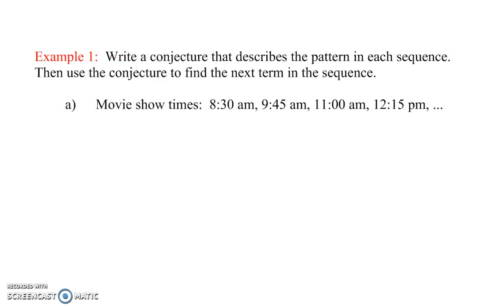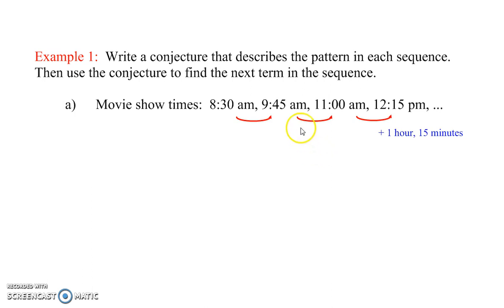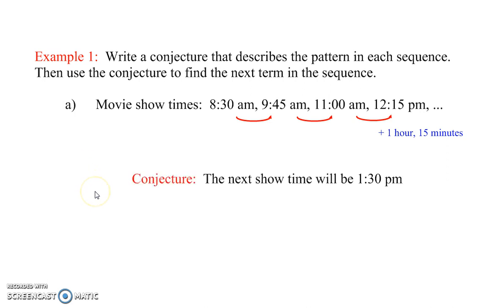Write a conjecture that describes the pattern in each sequence, then use the conjecture to find the next term in the sequence. Here are movie showtimes: 8:30, 9:45, 11:00, 12:15. Look at these numbers closely and see what you notice. We notice that every movie time is 1 hour and 15 minutes apart. We can draw a conclusion that the next movie showtime will be at 1:30 p.m.